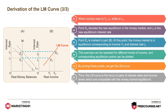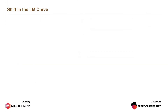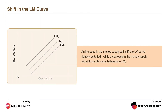Thus, the LM curve is the locus of pairs of interest rates and income levels which are compatible with money market equilibrium. The money market is in equilibrium only along the LM curve. An increase in the money supply will shift the LM curve rightwards to LM1, while a decrease in the money supply will shift the LM curve leftwards to LM2.